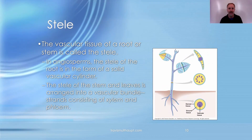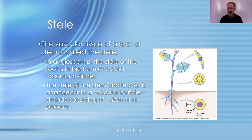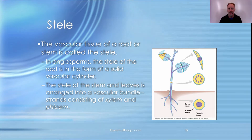The stele is the vascular tissue of the root or stem. In an angiosperm or flowering plant, the stele forms a solid cylinder in the root — visible as a purple region in a root cross-section. In the stem and leaves, the stele forms vascular bundles arranged differently depending on whether it's a monocot or a dicot.